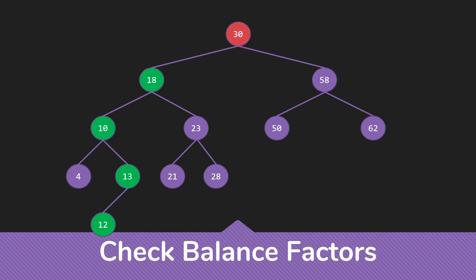Now, to figure out which kind of rotation we need, we're going to look at that child and grandchild. The 18 is the left child of 30 and 10 is the left child of 18. So we're doing a single rotation.